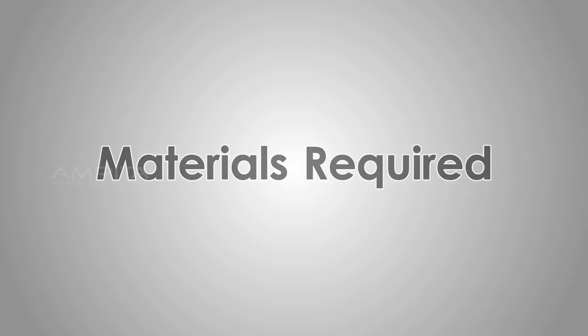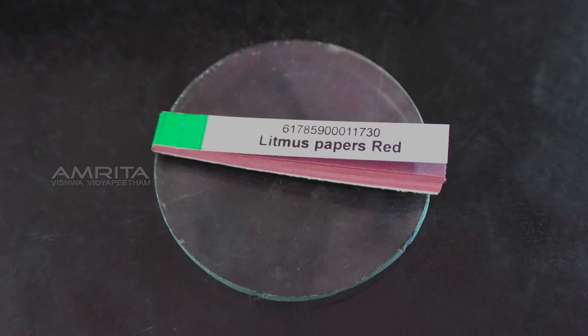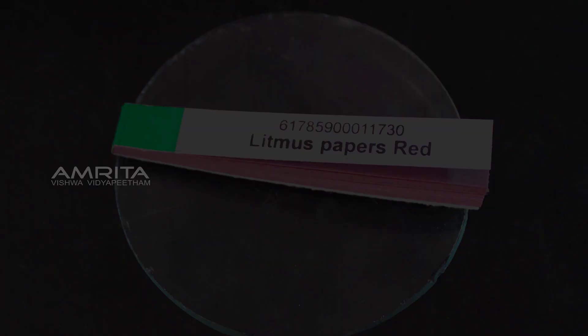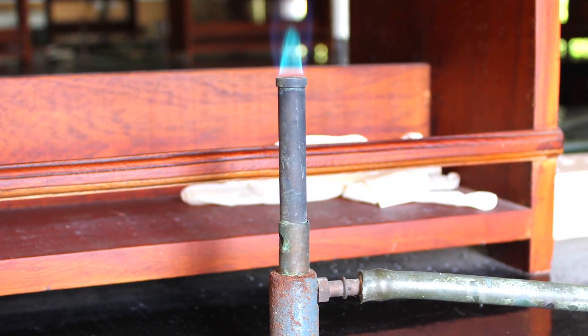Materials required: magnesium ribbon, red litmus paper, a pair of tongs, and a Bunsen burner. Procedure: